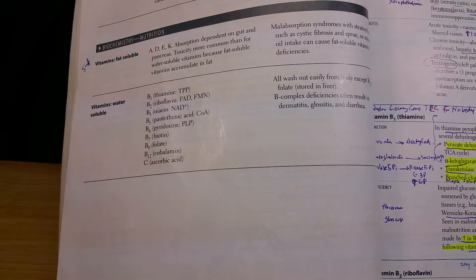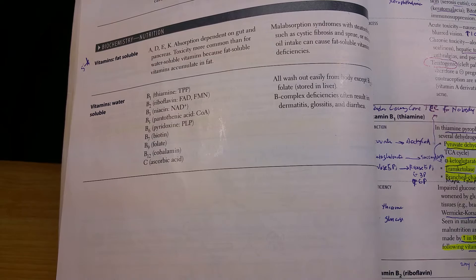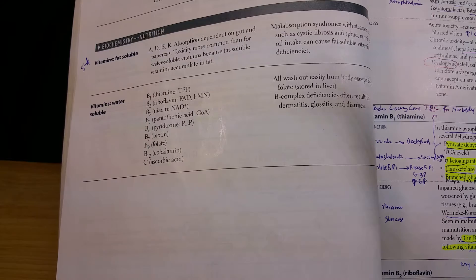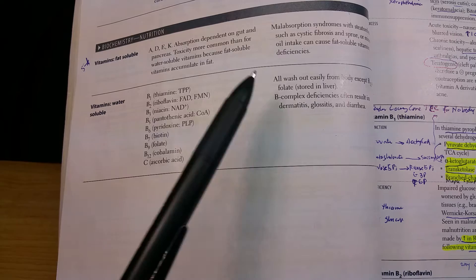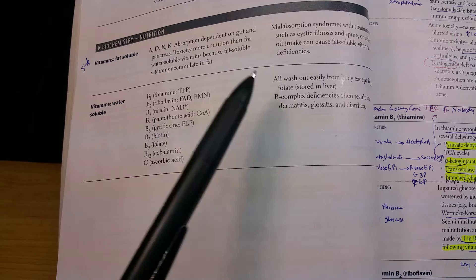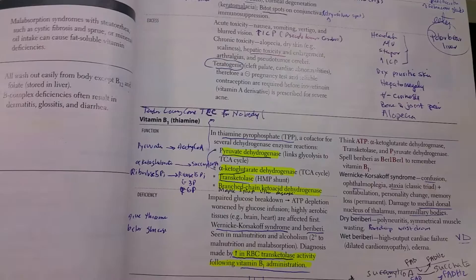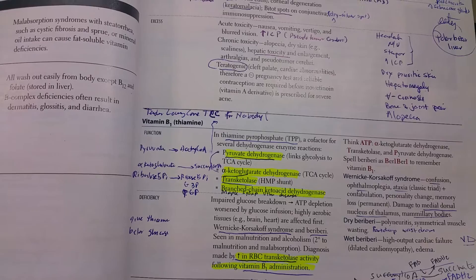We have fat-soluble vitamins and water-soluble vitamins. The fat-soluble vitamins are A, D, E, and K. Deficiency arises when there is malabsorption of fat, as in cystic fibrosis or pancreatic diseases. The water-soluble vitamins include the B complex and vitamin C. Deficiencies of B complex all cause dermatitis, glossitis, and diarrhea, so keep that in mind.